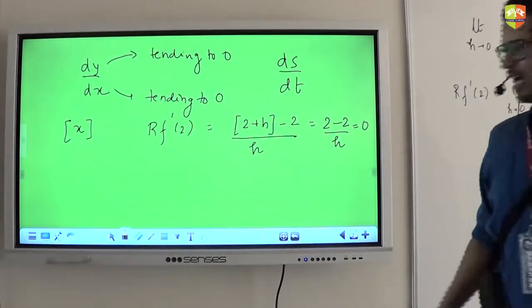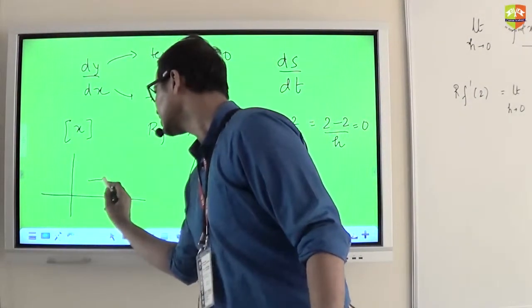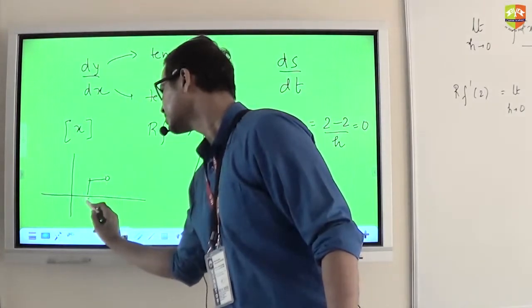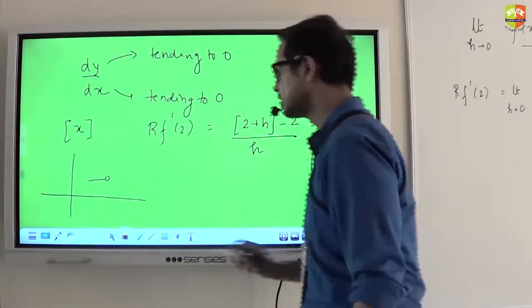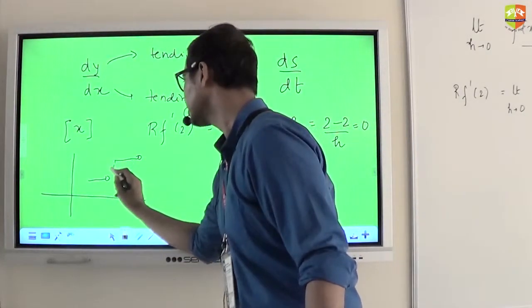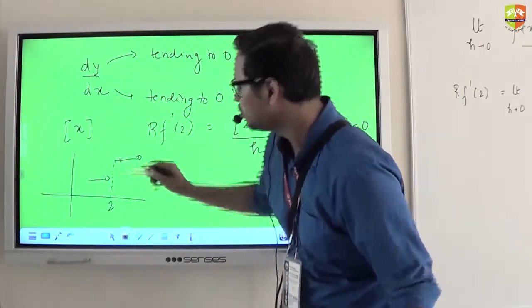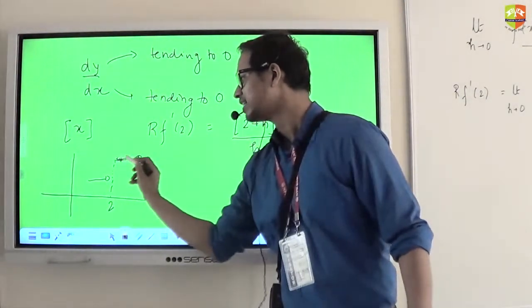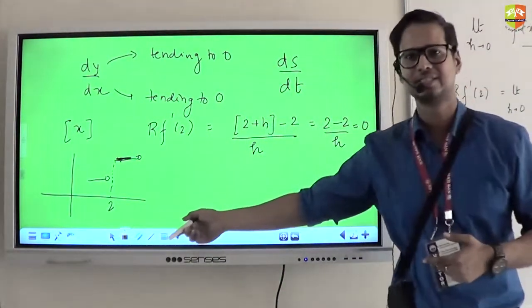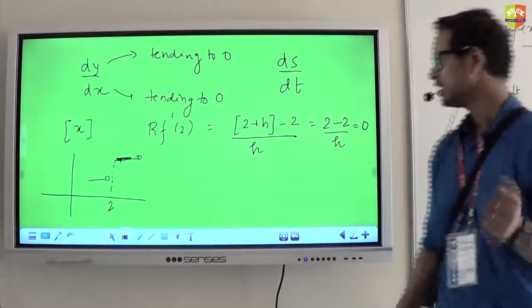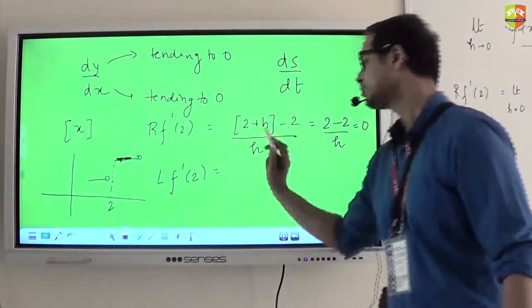And it is supported by the graph also. If you see the graph, this is the graph at 2. So if you take a point slightly right of 2, the slope of this line — what will be the slope? Zero, because that will be parallel to your x-axis. Now if I ask you what is the left-hand derivative at 2, what will you do?